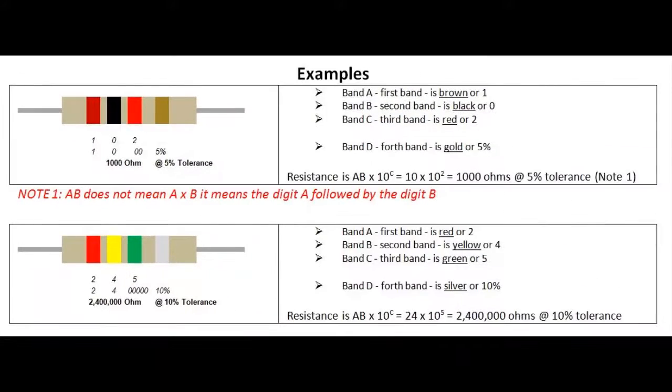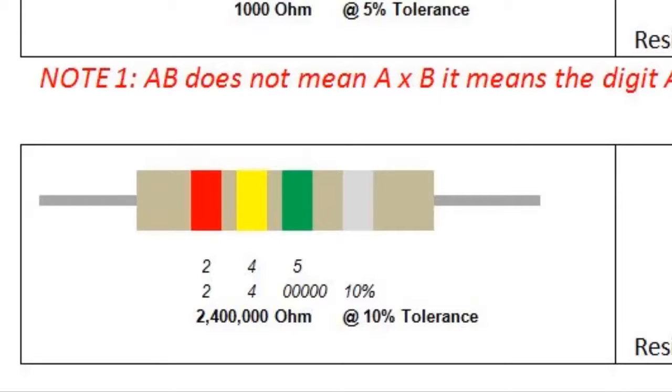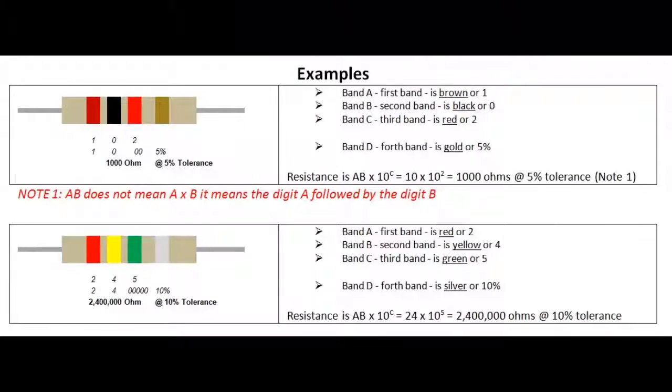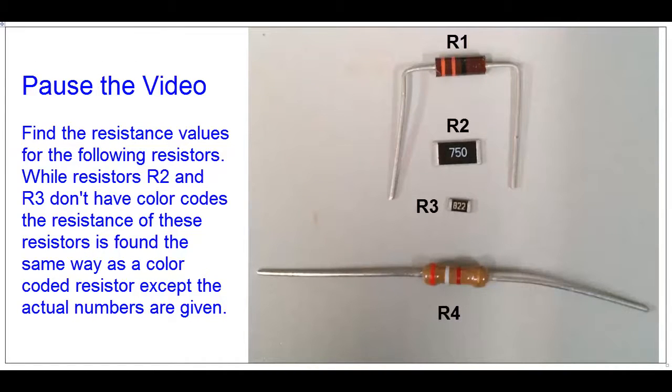We'll look at the other example here. We have red, yellow, and green. Red is 2, yellow is 4, so the first two digits for the resistance of this resistor are going to be 2-4. Green is 5, so that means five zeros follow 2 and 4 for a total resistance of 2,400,000 ohms or 2.4 megaohms. Pause the video and try to read the resistances for these resistors.